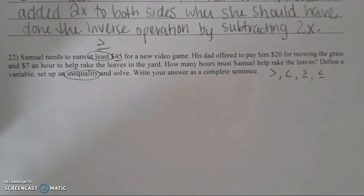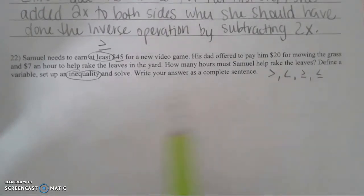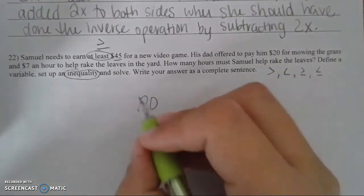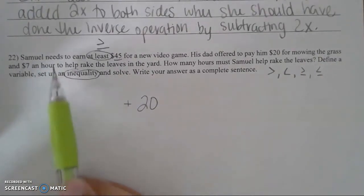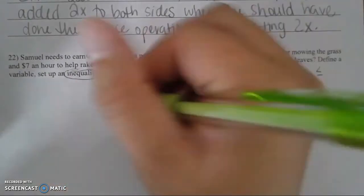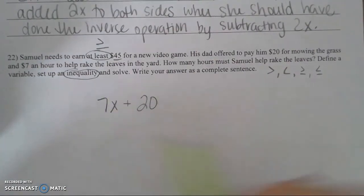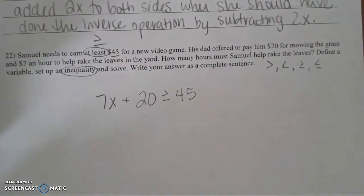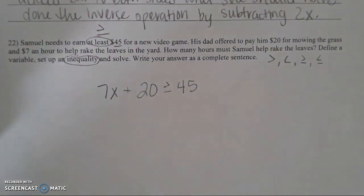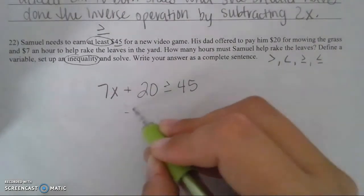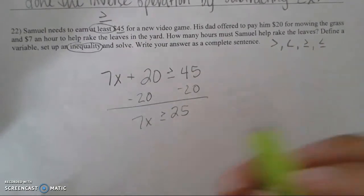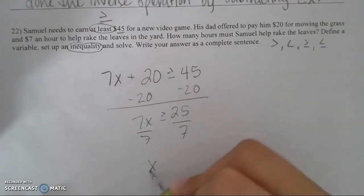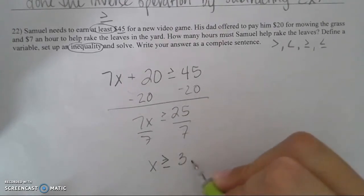The phrase 'at least $45' means he can make exactly $45 or more, so we use greater than or equal to. Set up the inequality just like an equation: the $20 for mowing is a constant, the $7 per hour uses a variable for hours. So we get 20 plus 7x is greater than or equal to 45. Subtract 20 on both sides to get 7x greater than or equal to 25, then divide by 7 to get approximately 3.57 hours.